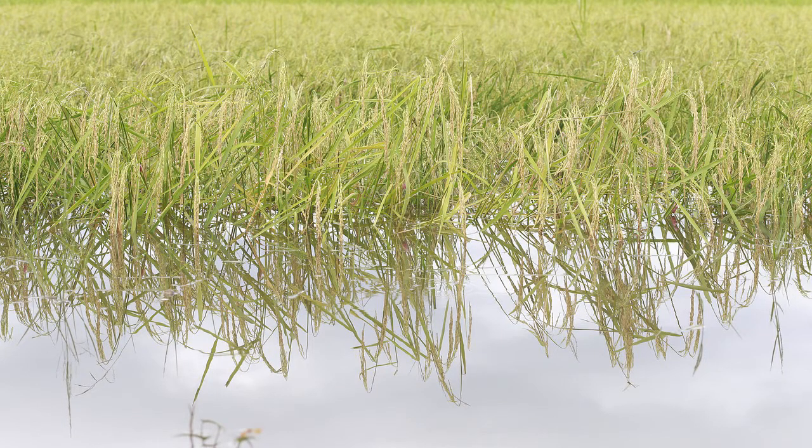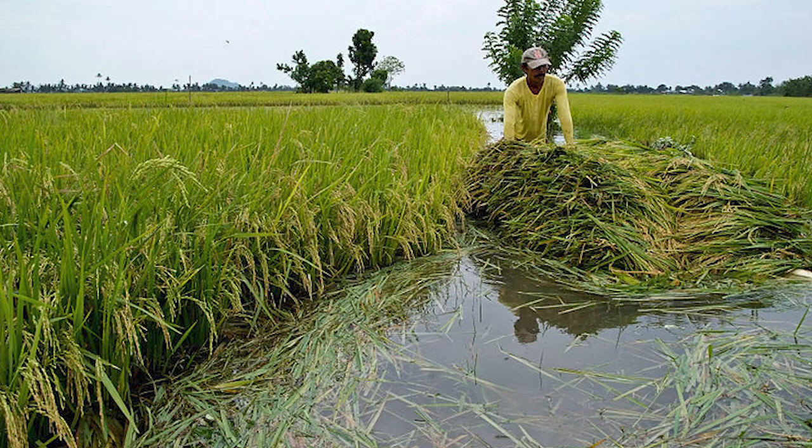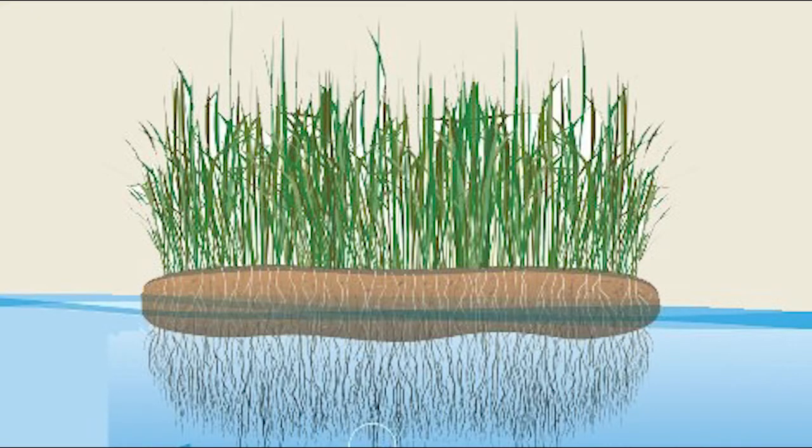Floods can even wipe out the crops and farms people depend on to survive. In some places, floods last many months and happen often. The land people used to farm on gets buried under water, so the food they were growing gets damaged. In many places, people plant vegetables on rafts called floating gardens.